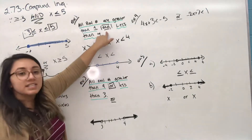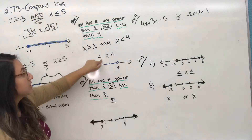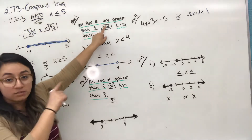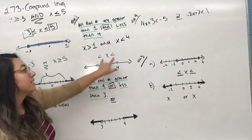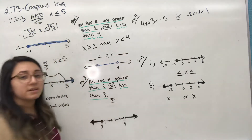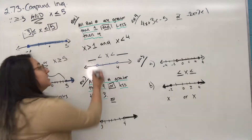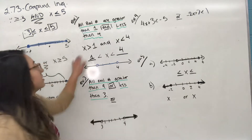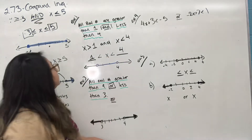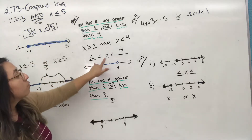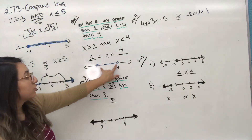For AND inequalities, it's one whole compound inequality — not two separate ones. You always use two less-than symbols: your minimum point on the left and maximum point on the right. There's no line underneath because it says greater than, not greater than or equal to. X is between one and four, so x could be two or three. That's why we use open intervals — open circles — at one and four on the number line.